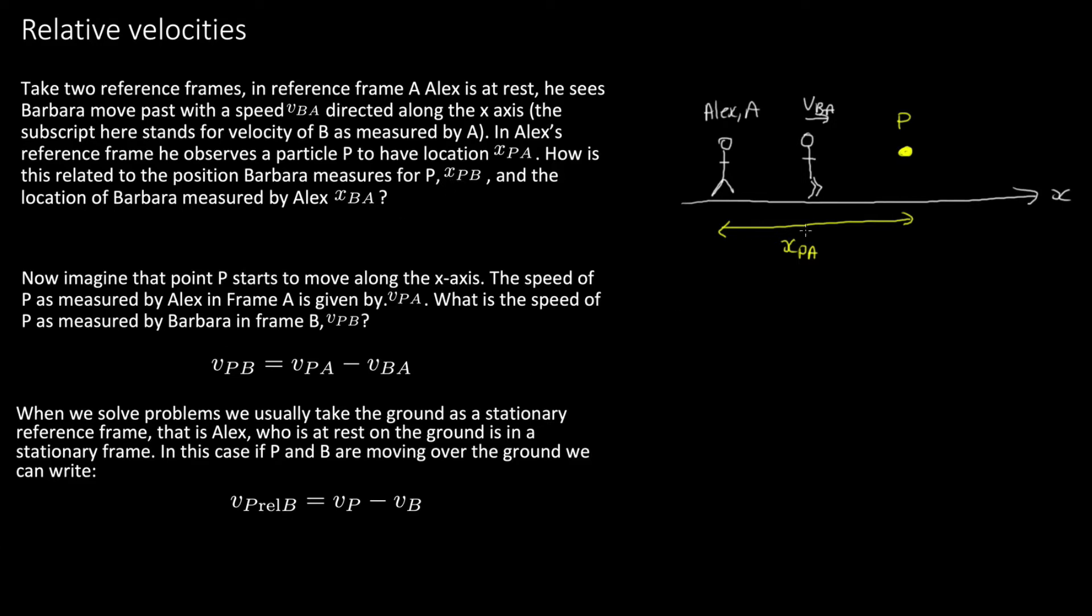If Barbara is measuring where p is relative to her, she'll measure it as this distance here. So this is going to be x of p measured by Barbara, and the location of Barbara measured by Alex. Now where does Alex measure Barbara to be? Well here. So this distance here is equal to x of Barbara measured by Alex. So hopefully you can see from this little diagram that this tells us that xpa is equal to xba plus xpb.